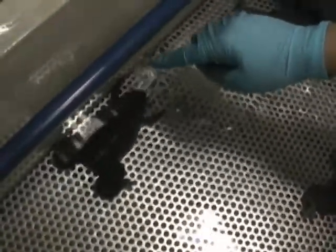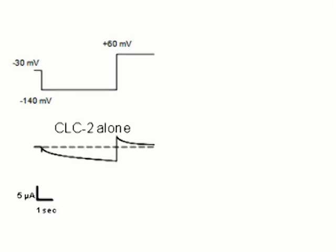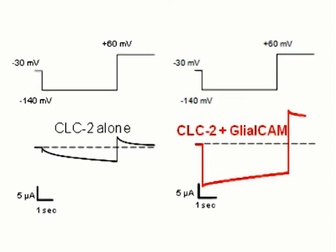Hello, my name is Michael Pusch from the Institute of Biophysics in Genova, Italy. Here in Genova, we have done most of the electrophysiological experiments with CLC2 and GlialCAM. The CLC2 channel can be expressed in Xenopus oocytes, and as seen in this current trace, it activates very slowly at a negative membrane potential of minus 140 mV, then decays back to a smaller value at plus 60 mV. In the brain, CLC2 is expressed in neurons as well as in glial cells. In glial cells, it interacts with the GlialCAM protein. To test the functional impact of this interaction on CLC2, we expressed both proteins simultaneously in oocytes, and the result was impressive — the currents were dramatically increased and had lost their time dependence and voltage dependence.